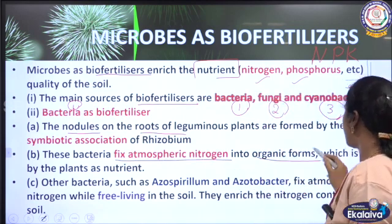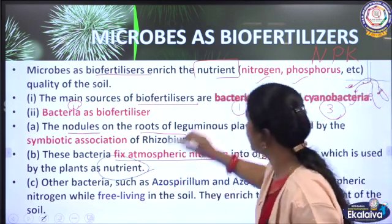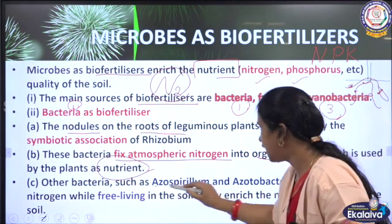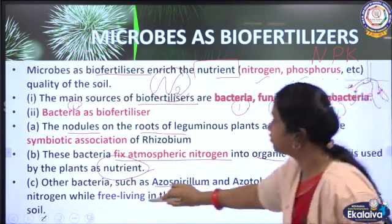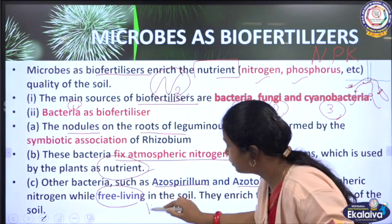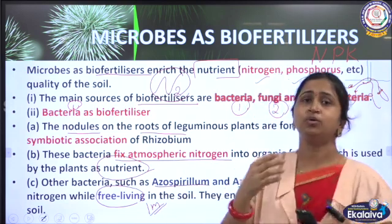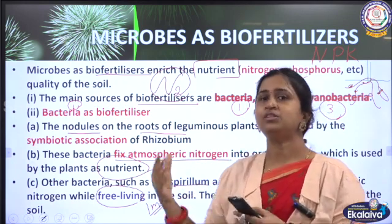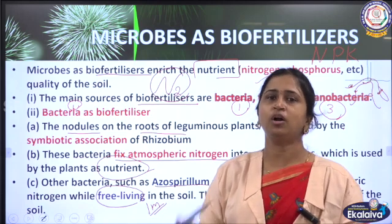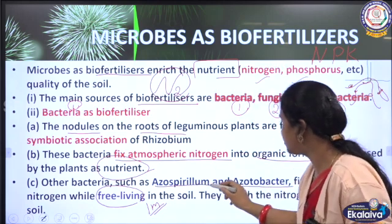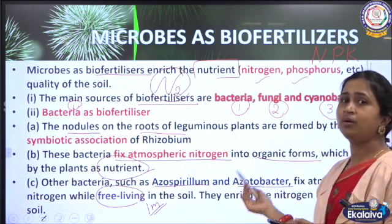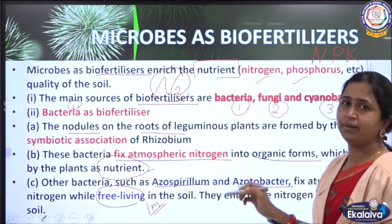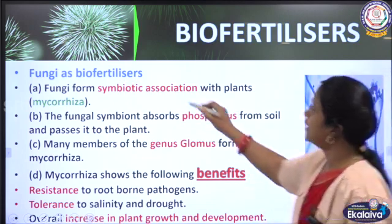For nitrogen fixation by bacteria, there are two types: free-living bacteria and non-free-living bacteria. The free-living nitrogen-fixing bacteria examples are Azospirillum and Acetobacter — an important one-mark question. The non-free-living example is Rhizobium, which lives in root nodules of leguminous plants in a symbiotic-like association, not as a free-living organism.